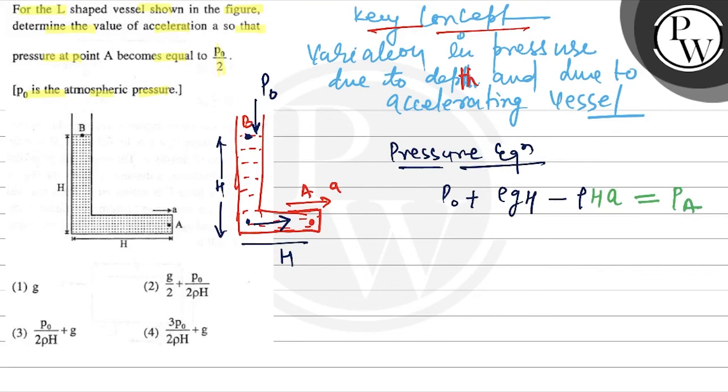Pressure at point A is P0/2. So P0 plus ρgh minus Pa is equal to ρha. P0 plus ρgh minus P0/2 should be equal to ρha.